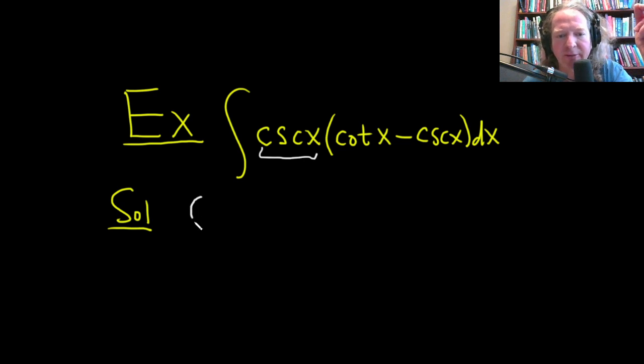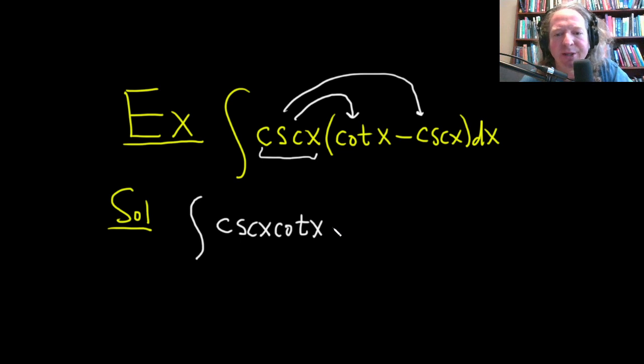We still have the integral sign. Now we're going to multiply cosecant times cotangent, which gives us cosecant x cotangent x. Then cosecant times negative cosecant is negative cosecant squared x. Really nice. We still have our dx there.